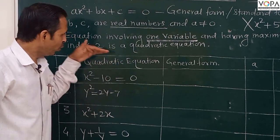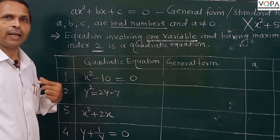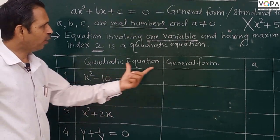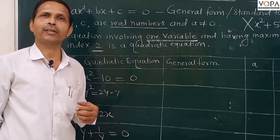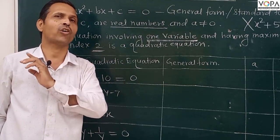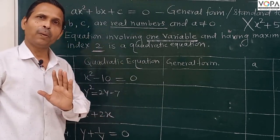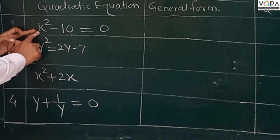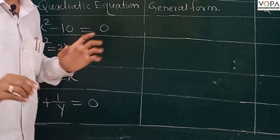Now let's go ahead. I have written some quadratic equations here. These are the quadratic equations and we have to write the general form of each. Let's take the first equation: x² - 10 = 0.